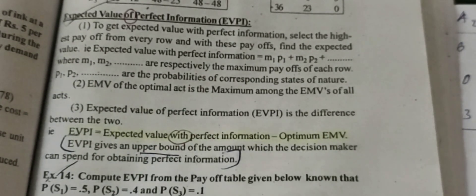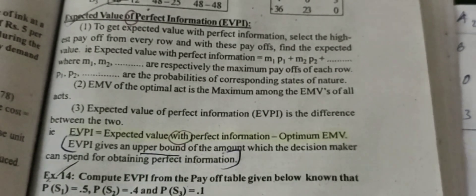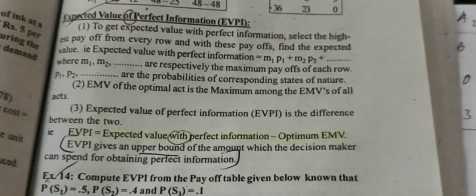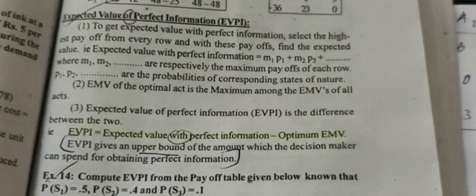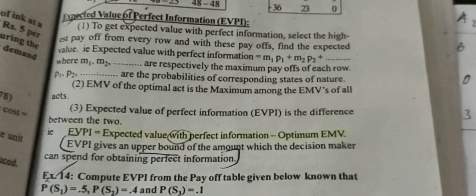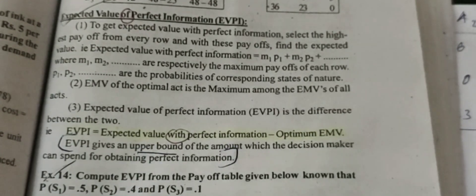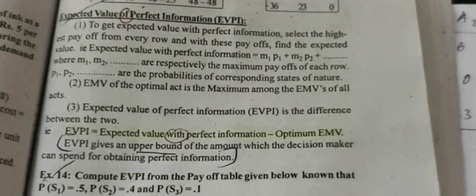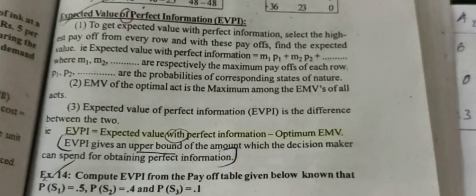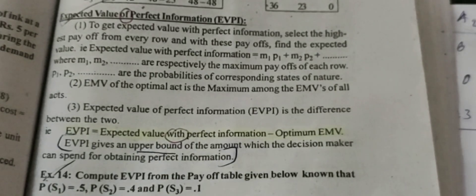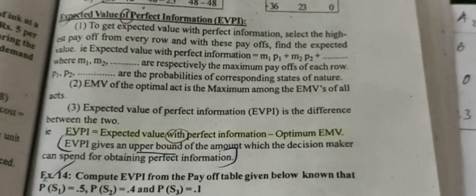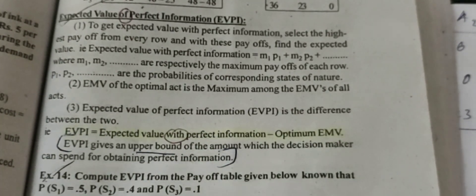This is the third point: expected value of perfect information. EVPI is the difference between the two — that is, expected value with perfect information minus the optimum EMV. EVPI gives the upper bound of the amount which the decision maker can spend for obtaining the perfect information.